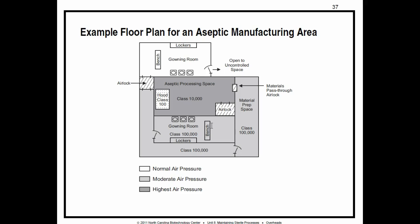On page 64, examples of clean rooms are covered. You've learned that different clean rooms are required for different kinds of work, and that the cleaner the space, the lower the number of the clean room classification. Please make sure you read through the descriptions on pages 64 and 65. There will be an activity for you to do on the Moodle site. Page 67 describes the picture shown on page 66.